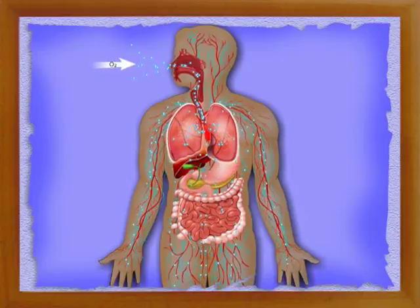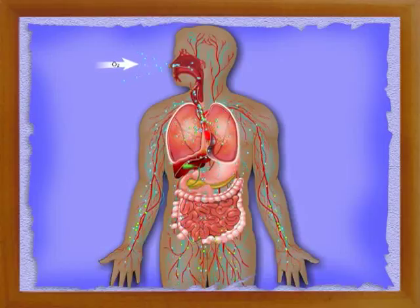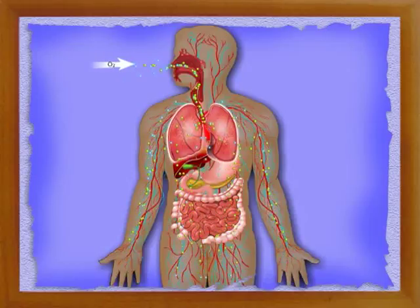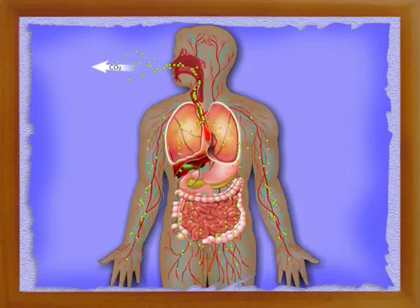Blood performs many functions in the body. It transports oxygen from the lungs to various parts of the body, and also transports carbon dioxide from various parts of the body to the lungs. Blood transports water, salts, and digested food materials from the intestine to various parts of the body. Blood transports substances called hormones from endocrine glands to other body parts, and helps in maintaining uniform body temperature, water, and salt content of the body.